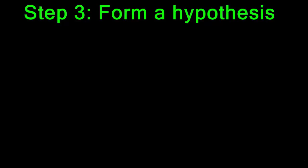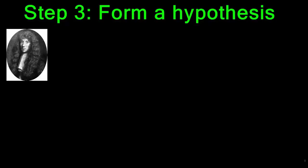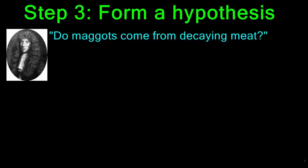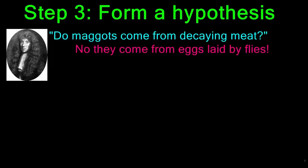Step three of the scientific method is forming a hypothesis. A hypothesis is a possible solution to your question. In Redi's case, his question was: do maggots come from decaying meat? Based on his research that living things come from other living things of the same kind, he would hypothesize that maggots come from eggs laid by flies, not from decaying meat.